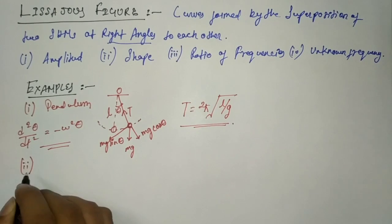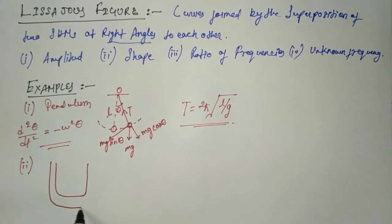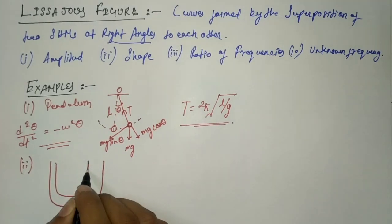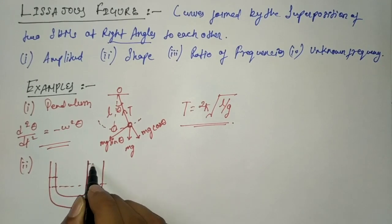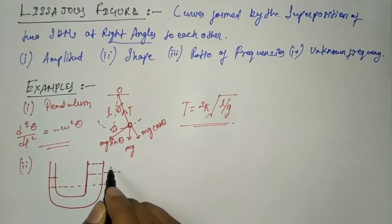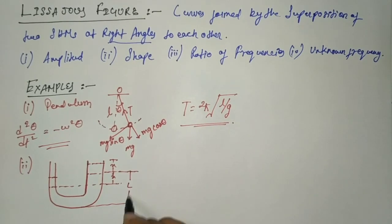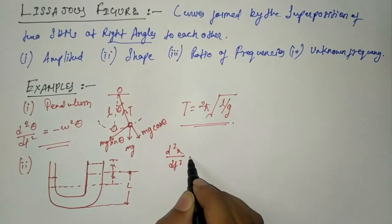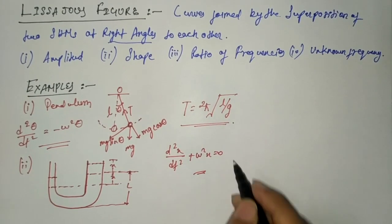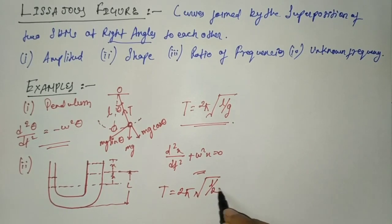Another example is the oscillations of fluid in a U-tube manometer. With fluid displaced by x on each side and total fluid length L, the equation of motion is d²x/dt² + ω²x = 0. The time period of oscillation is T = 2π√(L/2g).